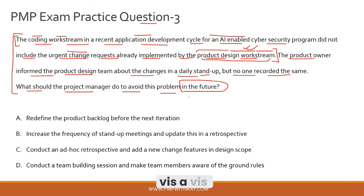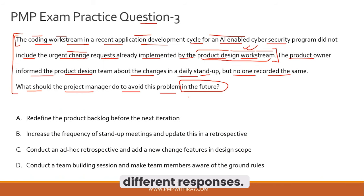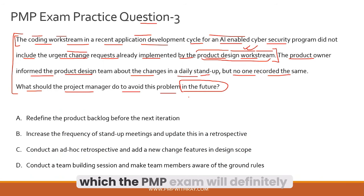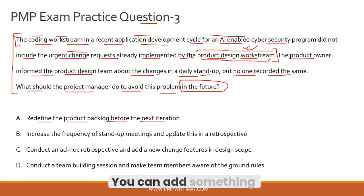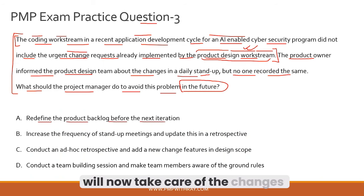Solving something now versus preventing it in the future are very different responses — be aware of these nuances the PMP exam will test. Option A — redefine the product backlog before the next iteration — is incorrect. While you could add the changes to the backlog for damage control this sprint, it does not provide a systemic fix that will solve this issue for future iterations.